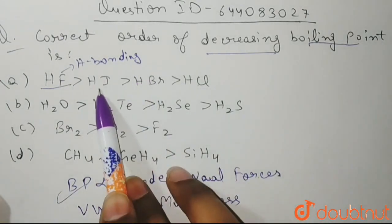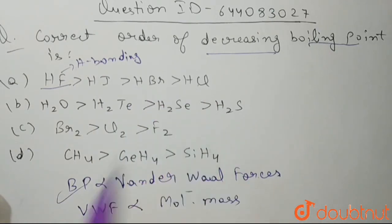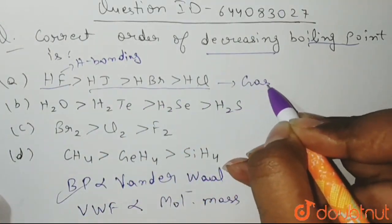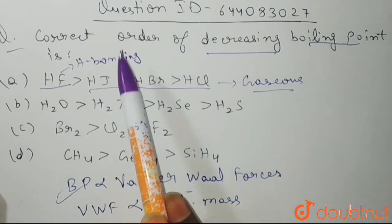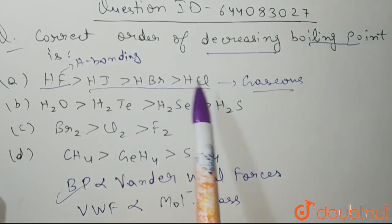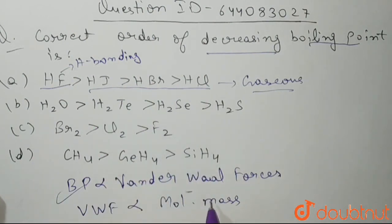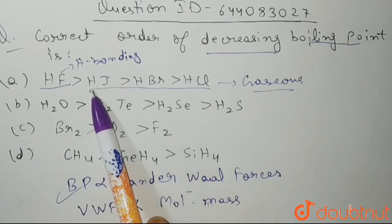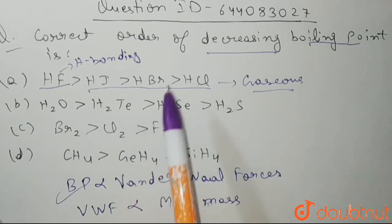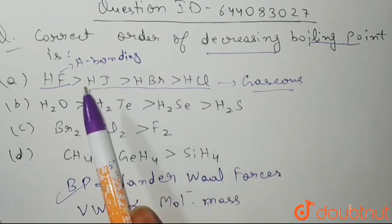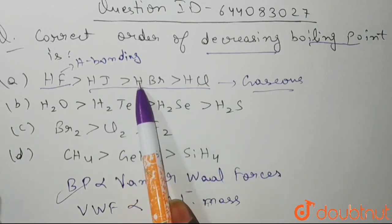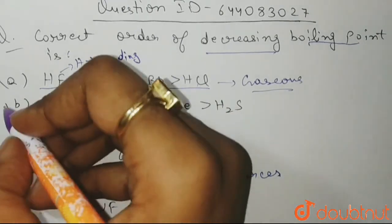If you see HI, HBr, and HCl, all these three are gaseous, so they are not going to form hydrogen bonds, but they will have Van der Waal forces between them. Greater the molecular mass, greater will be the Van der Waal forces and thus higher will be the boiling point. That's why HI has the greater molecular mass, then HBr and then HCl. So HI > HBr > HCl, and option A is correct.